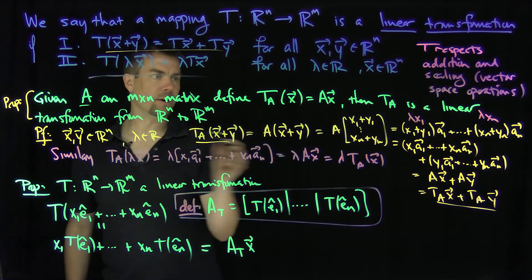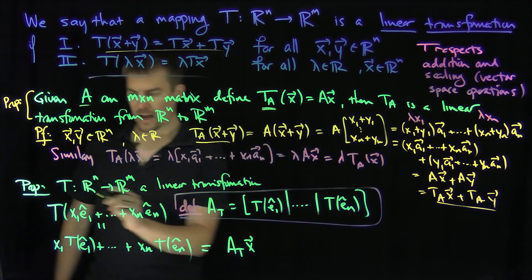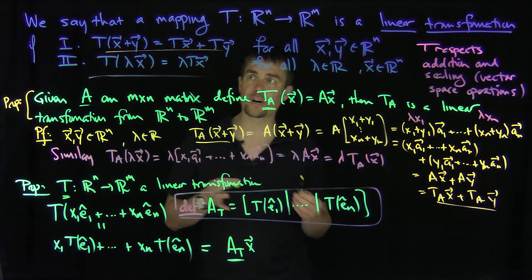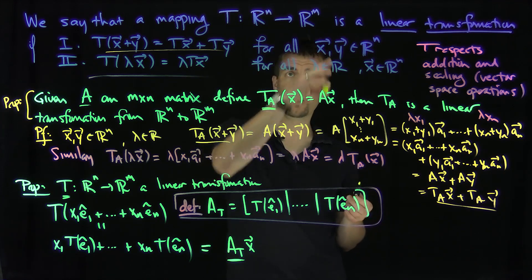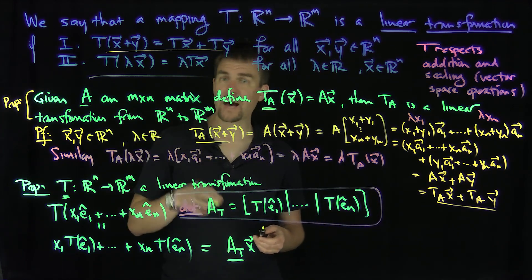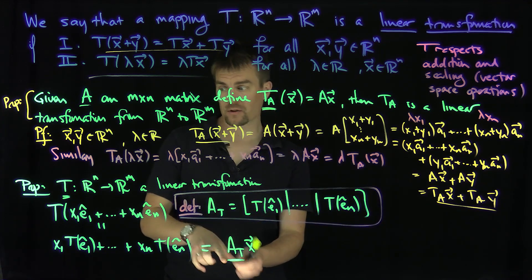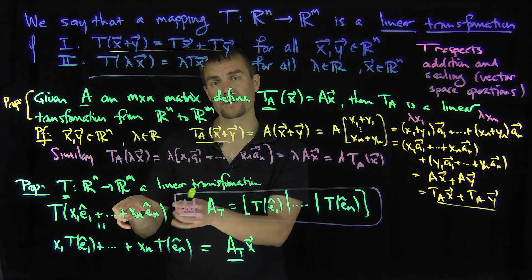For every matrix A, there exists a linear transformation T_A, and for every linear transformation T, there exists a matrix A_T. So the linear transformations from R^n to R^m, and the matrices that are m by n are one to one corresponds with one another.